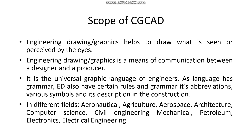Engineering drawing and graphics helps us to draw what is seen or perceived by the eyes. Whatever your eyes are perceiving — if you are sitting in a room and look around, you can see objects like an almirah, TV, table, or chair. What my eyes are perceiving, I can understand those objects as figures and give them names — a certain type of figure I call a table, another type I call a chair.